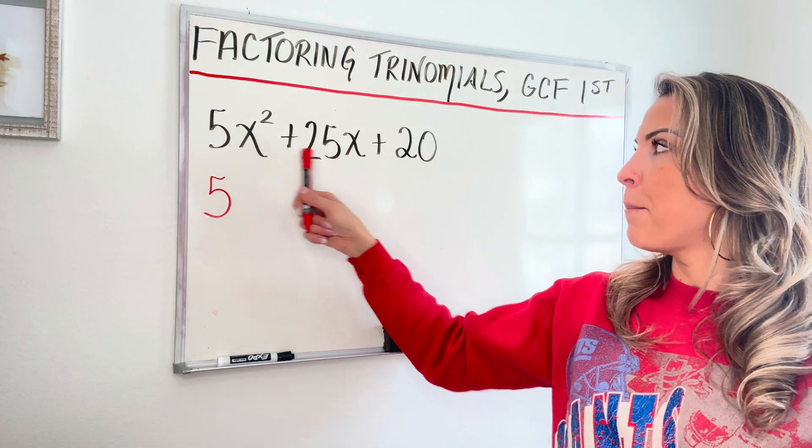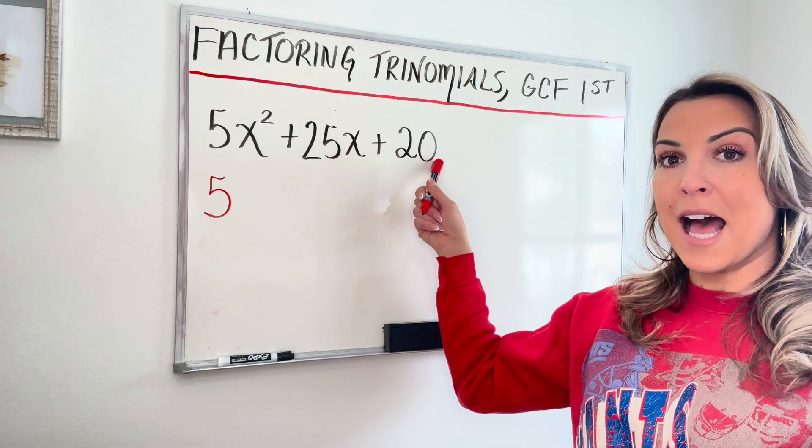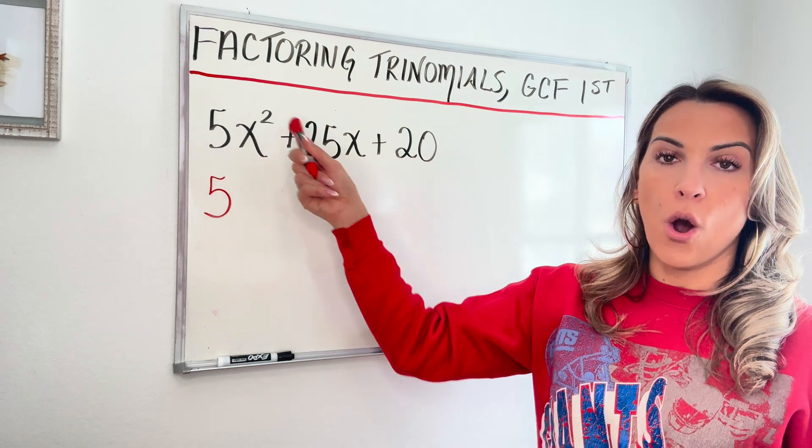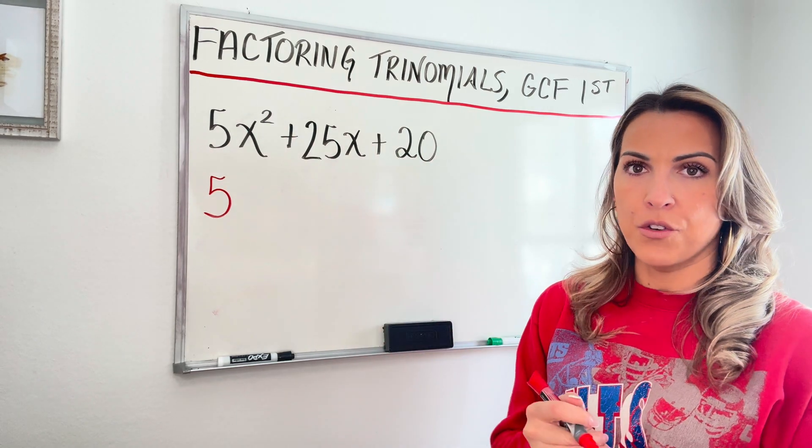Now for the variables, I can't pull out a variable term because this last term doesn't have a variable and the GCF needs to be common for all the terms.